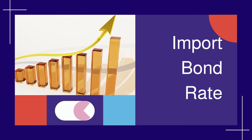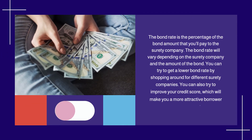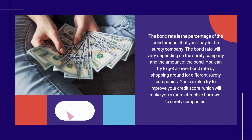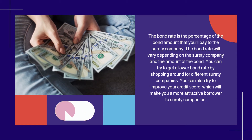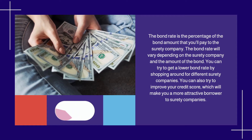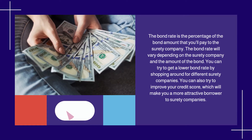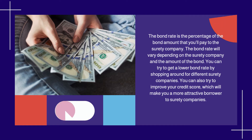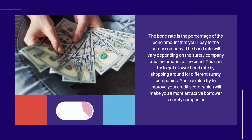Import Bond Rate. The bond rate is the percentage of the bond amount that you'll pay to the surety company. The bond rate will vary depending on the surety company and the amount of the bond. You can try to get a lower bond rate by shopping around for different surety companies. You can also try to improve your credit score, which will make you a more attractive borrower to surety companies.